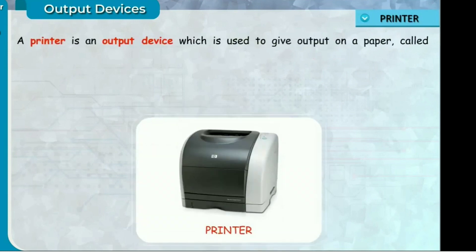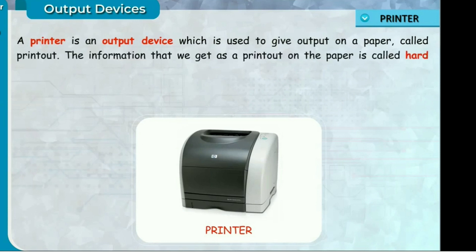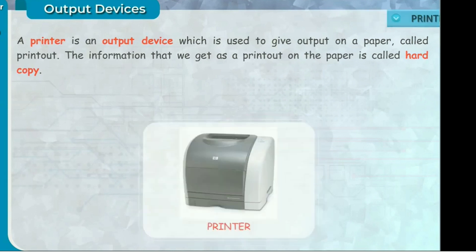Printer — a printer is an output device which is used to give output on a paper, called a printout. The information that we get as a printout on the paper is called hard copy.